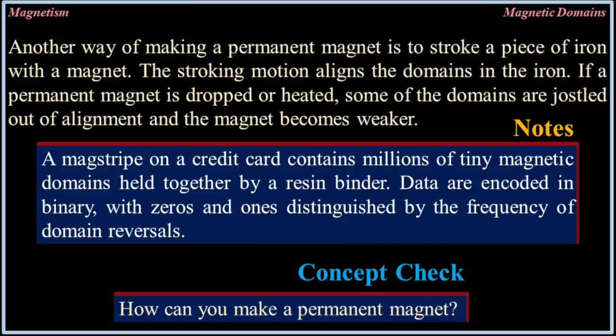Another way of making a permanent magnet is to stroke a piece of iron with a magnet. The stroking motion aligns the domains. If a permanent magnet is dropped or heated, some of the domains are jostled out of alignment and the magnet becomes weaker. A mag strip on a credit card contains millions of tiny magnetic domains held together by a resin binder. Data are encoded in binary with zeros and ones distinguished by the frequency of domain reversals.